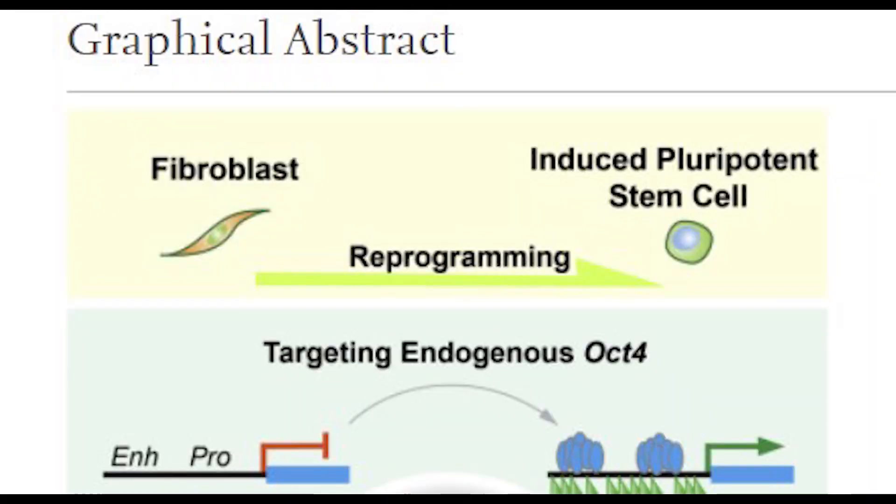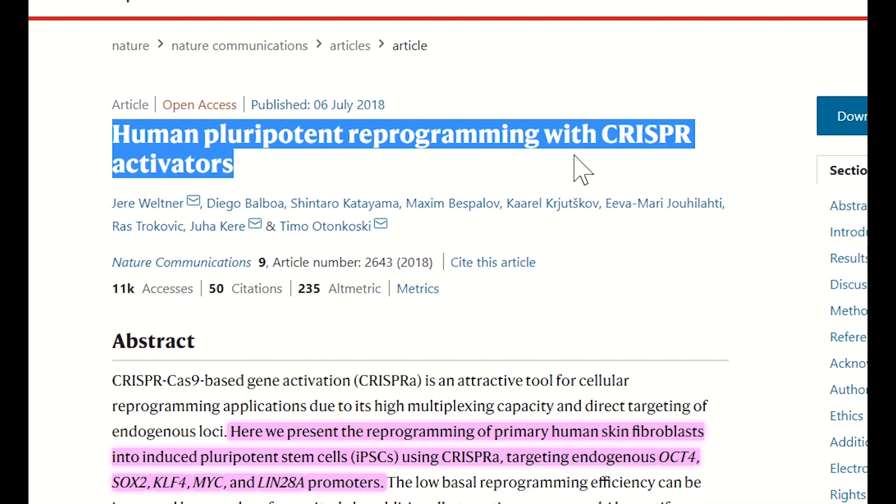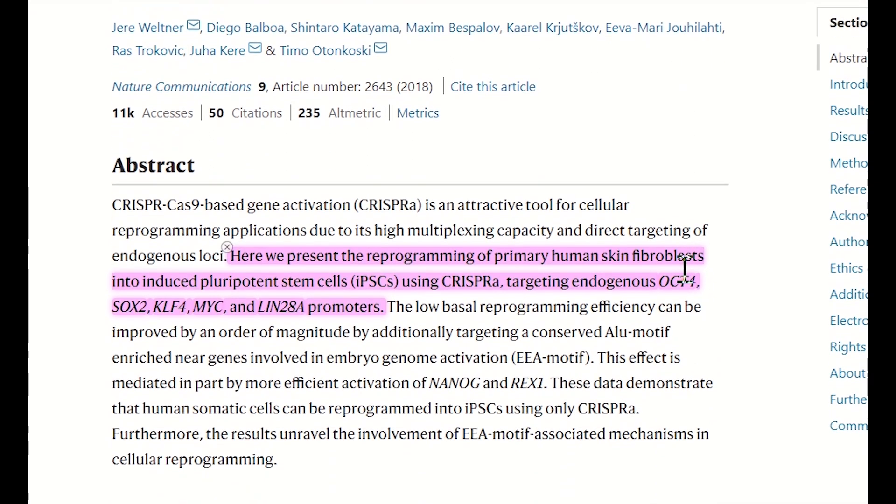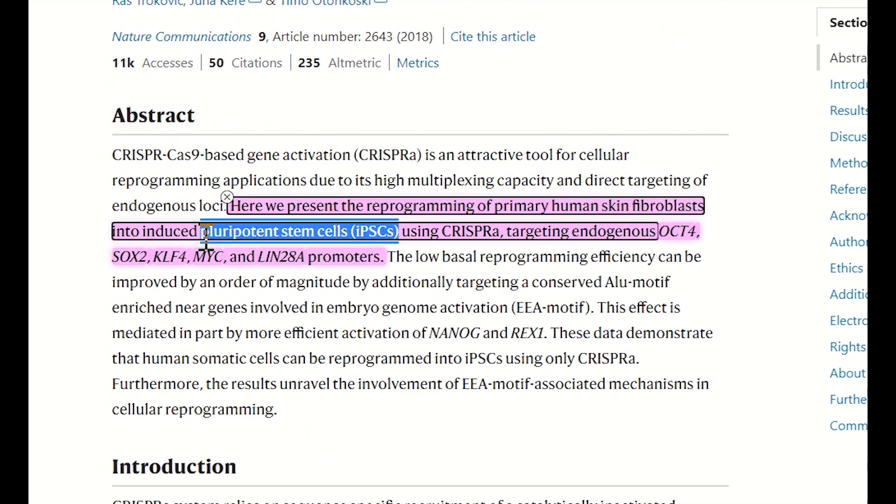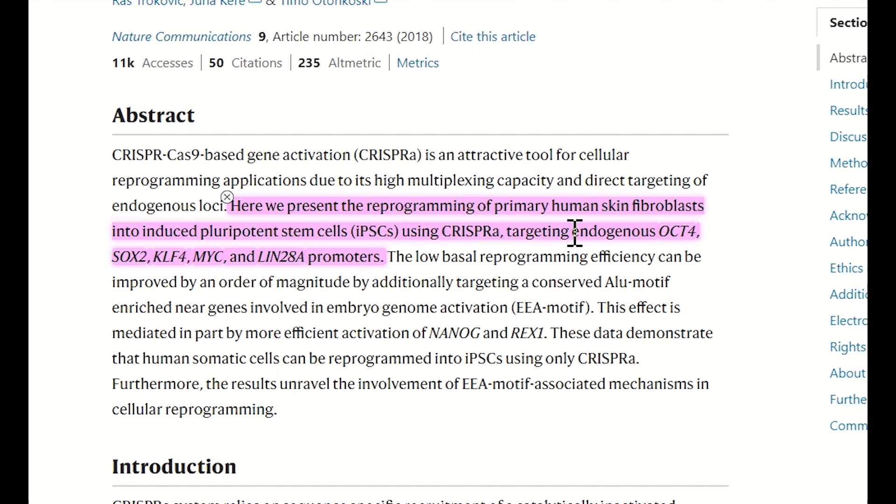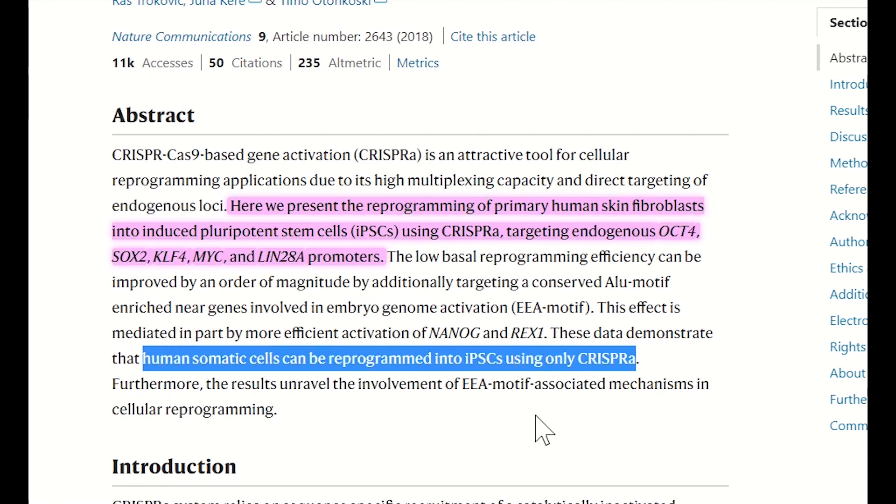But what about in terms of cellular reprogramming in human cells? Well, a study came out later in 2018 that also achieved reprogramming, this time of primary human skin fibroblasts, into induced pluripotent stem cells by using this CRISPR activation approach. However, for human cells, it seems at the moment that more genes are needed to be activated to achieve sufficient efficiency and establish pluripotency in human cells compared to mouse cells.